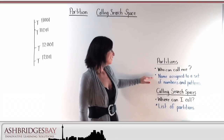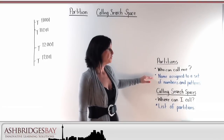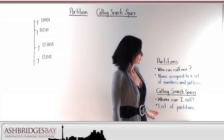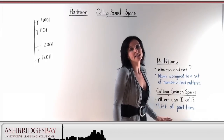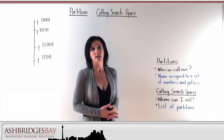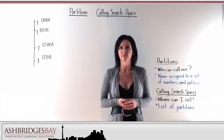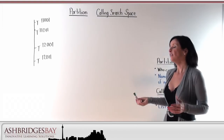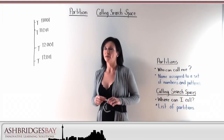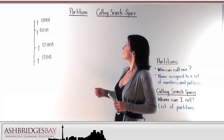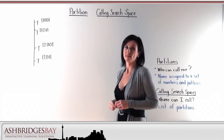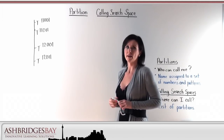Basically, partitions are a name assigned to a set of numbers and patterns. A calling search space is a list of partitions — it's a list of the numbers that I can dial from my phone. When you configure a line, if you don't assign it a partition, it's callable from anywhere. Right now these lines don't have any partitions or any calling search spaces, so everybody can call everywhere.